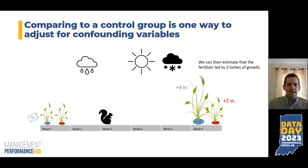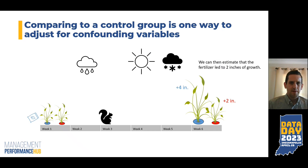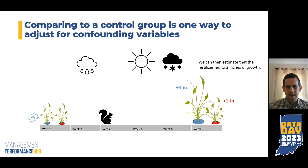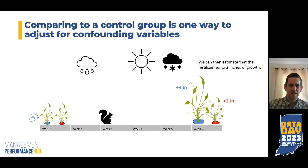So one way to isolate the amount of growth due to the fertilizer is by using a control group to adjust for these confounding variables. In this example, maybe we give the blue plant the fertilizer, but not the red plant. Both plants experienced the same confounding factors over the course of five weeks. We come back and find the plant that received the fertilizer grew four inches and the plant that didn't grew two inches — from that we can estimate that the fertilizer led to two inches of growth. It's a fun thought experiment to warm up on these concepts.